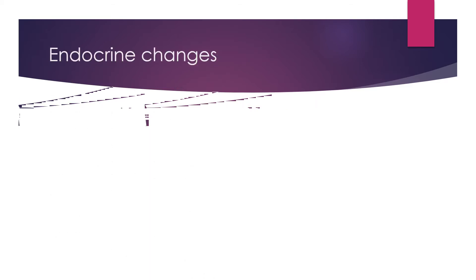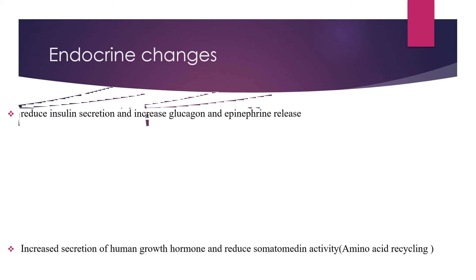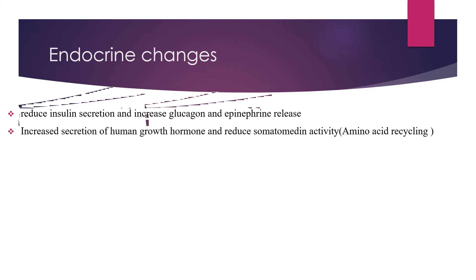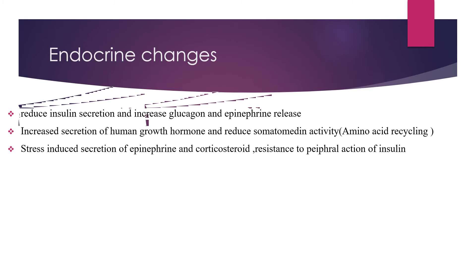There are endocrine abnormalities including reduced insulin secretion and increased glucagon and epinephrine release, increased secretion of human growth hormone with reduced somatomedin activity, and stress-induced secretion of epinephrine and cortisol. There is also resistance to peripheral action of insulin, decreased thyroxine level, and decreased gonadotropin level.